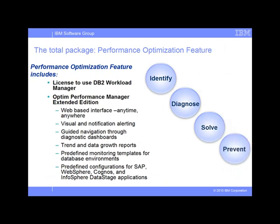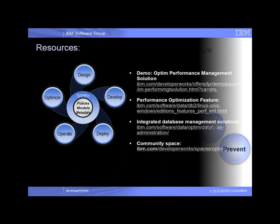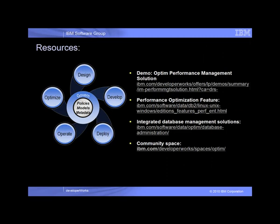DB2 workload management is available as a packaged solution in the DB2 performance optimization feature, which includes both the license to enable workload management on the DB2 server and Optim Performance Manager Extended Edition. Optim Performance Manager Extended Edition goes above and beyond workload management configuration — it provides rich monitoring, alerting, and reporting capabilities for your DB2 server, as well as extended insights across the software stack for your database applications, including key packaged applications such as SAP and Cognos. To find more information about the DB2 performance optimization feature or how other integrated data management solutions can help you manage the data and database application lifecycle environment, click on the available resources shown here.